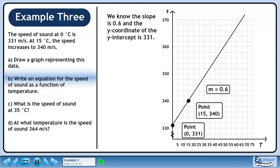We know the slope is 0.6 and the y-coordinate of the y-intercept is 331. To get the equation, start with y equals mx plus b. Plug in m and b to get y equals 0.6x plus 331. We are asked to write this as a function. The dependent variable is speed and the independent variable is temperature, so the function is s(t) equals 0.6t plus 331.